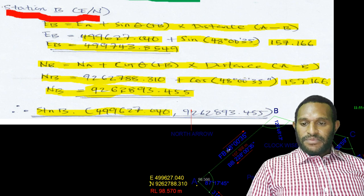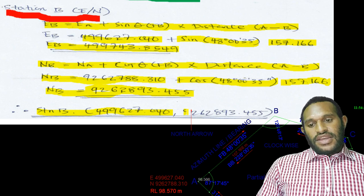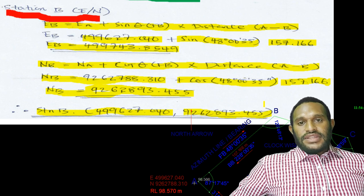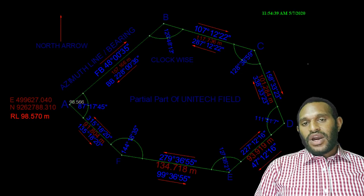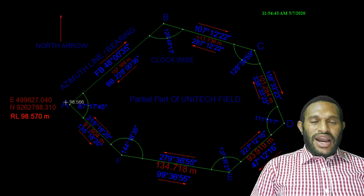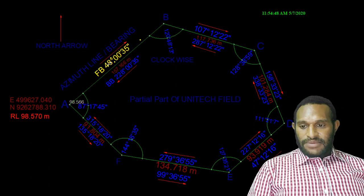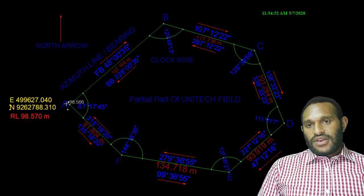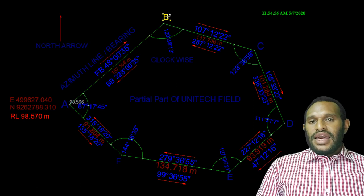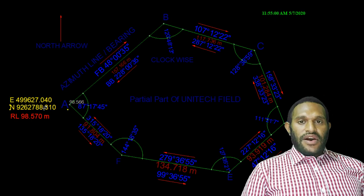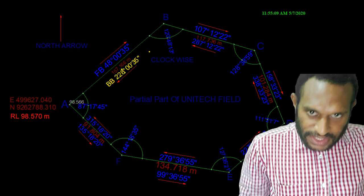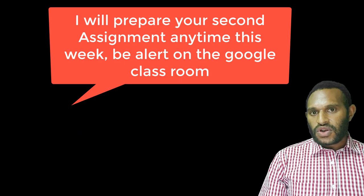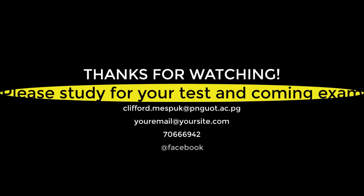The northings of point B equals 9262893.455. So at station B, our new coordinate is eastings 499743.8549 and northings 9262893.455. This is how you do the coordinate calculations when you have the known distance, bearing, and one known coordinate as the reference. Use the same method to calculate the coordinates of points C, D, E, and F. This concludes today's lecture on conversions of bearing and distance to coordinates. Thank you.